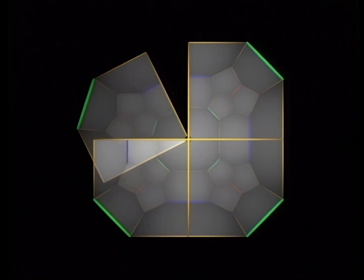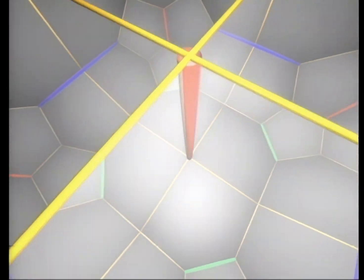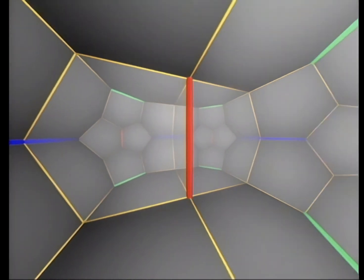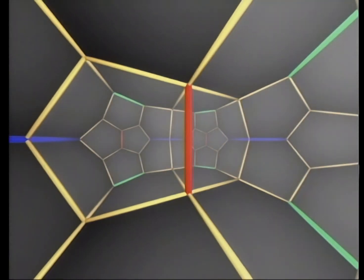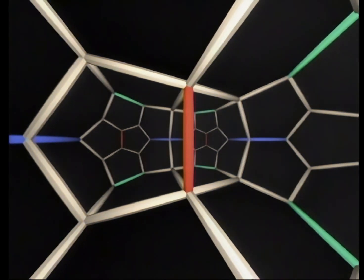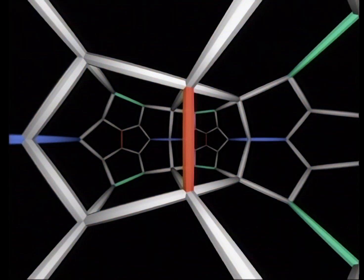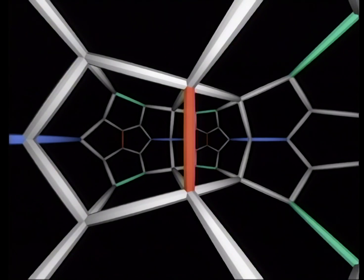We can move our viewpoint inside this figure. Now we have four-fold symmetry around one axis. Before exploring further we'll remove the walls and change the shape and color of the beams. We can continue to add copies of the dodecahedron around each colored axis.